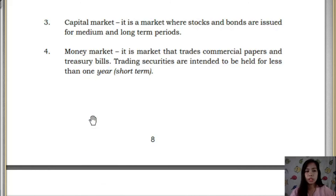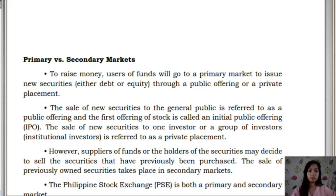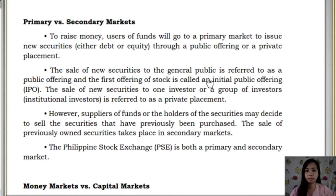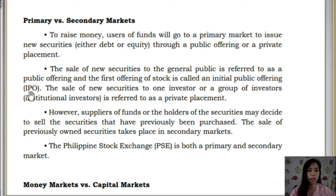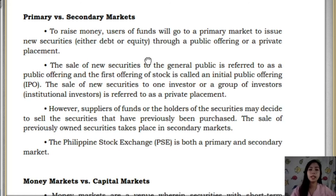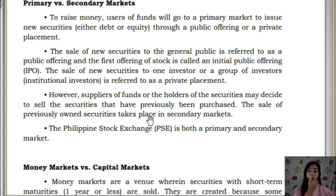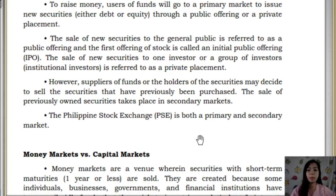Financial markets are organized forums in which the suppliers and users of various types of funds can make transactions directly. The types of financial markets are: primary market, secondary market, capital market, and money market. Regarding primary versus secondary market — if a user of funds needs money, they go directly to the primary market to issue new securities, which is what we call an Initial Public Offering (IPO). When a company needs additional capital, they go directly to the primary market. However, if the holder of securities decides to sell, the sale of previously purchased securities takes place in the secondary market. The Philippine Stock Exchange is both a primary and secondary market.